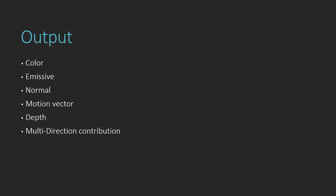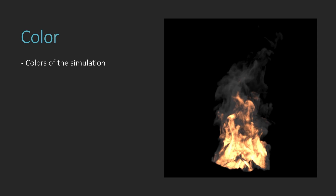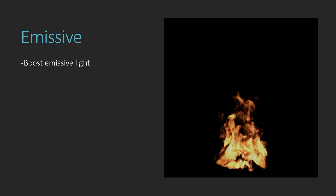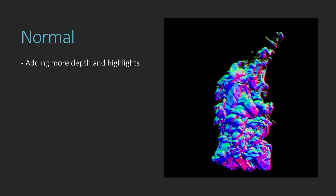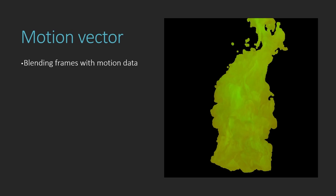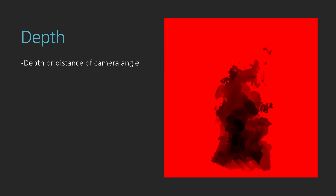When you press render, you get multiple outputs: color, emissive, normal, motion vector, depth, and multi-directional contribution. The color is just what you see in the viewport — the texture you'll need most of the time. The emissive map is used in a game engine to boost the emissive channel, faking a glow or bloom. The normal map adds depth and highlights to make it feel like a 3D volume. Motion vectors blend frames together with motion data.